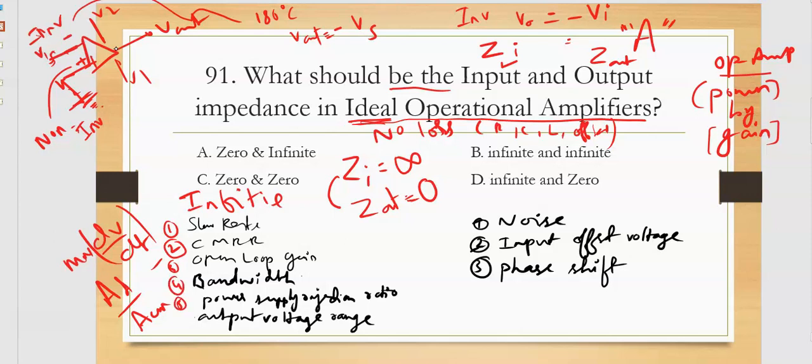You have bandwidth, and bandwidth should be infinite. The fifth one is power supply rejection ratio - that is also infinite in the ideal case. The output voltage range - the output of ideal op-amp should be zero error. Output noise should be zero in the ideal case.